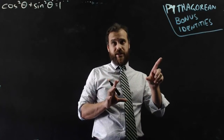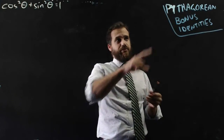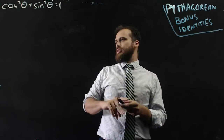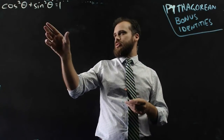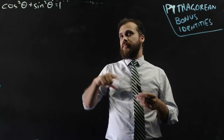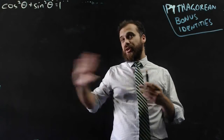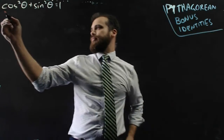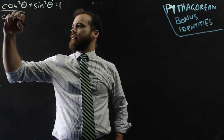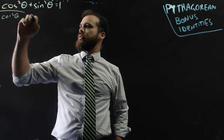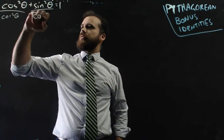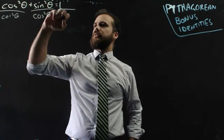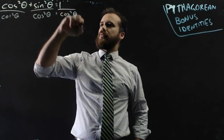Now we know what the Pythagorean identity is, we can do a couple of bonus identities that come straight out of this. I've got cos squared theta plus sin squared theta equals 1. What would happen if I divided everything by cos squared theta? Divided by cos squared theta, divided by cos squared theta equals 1 over cos squared theta.